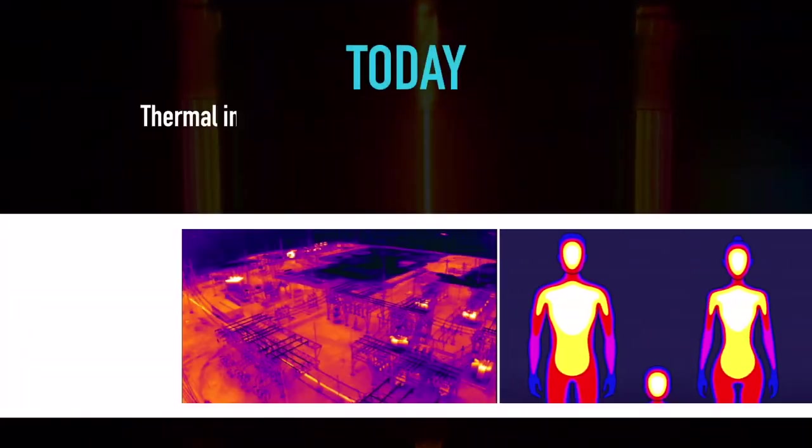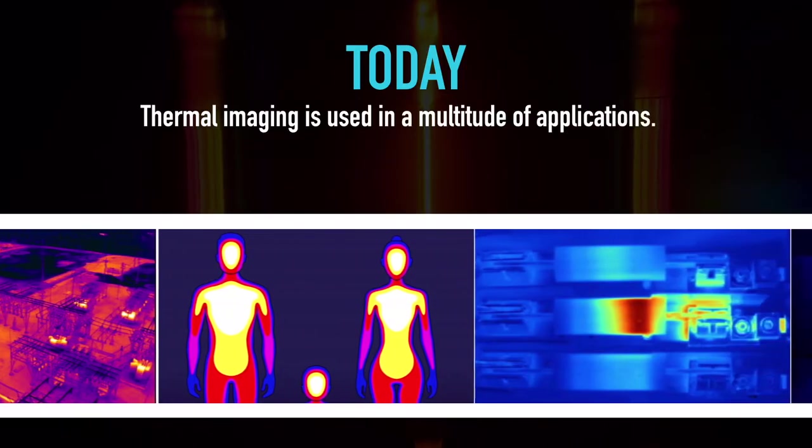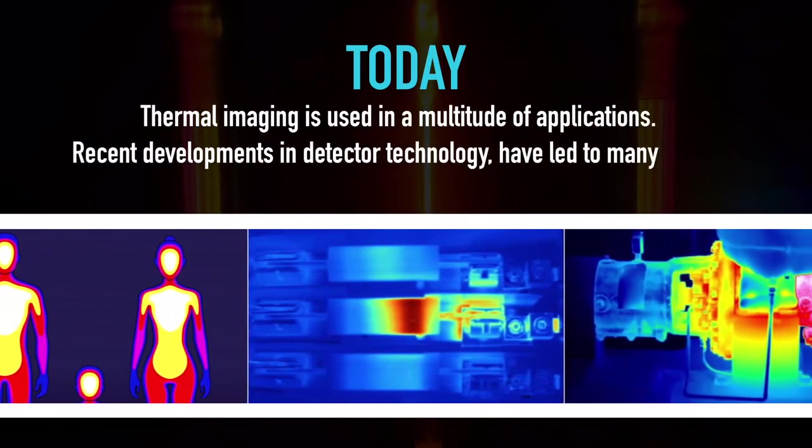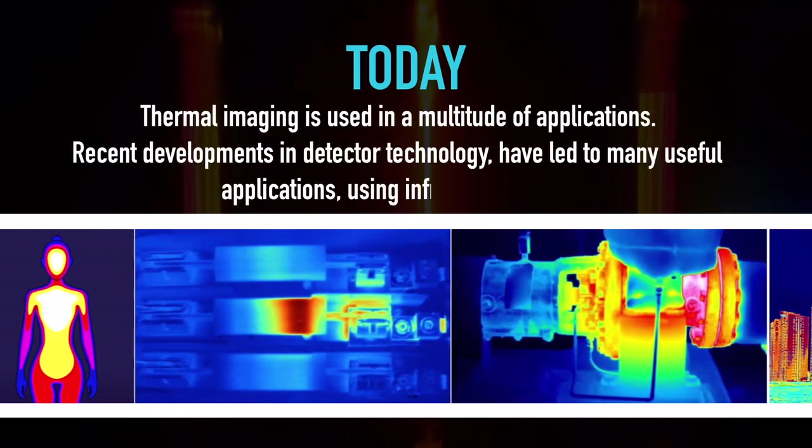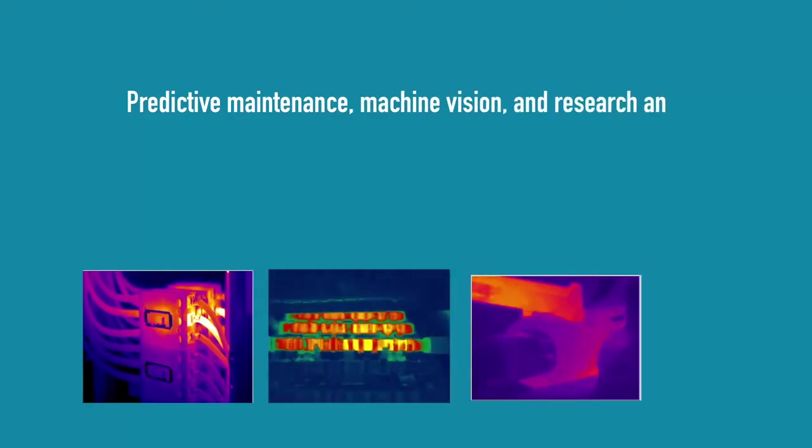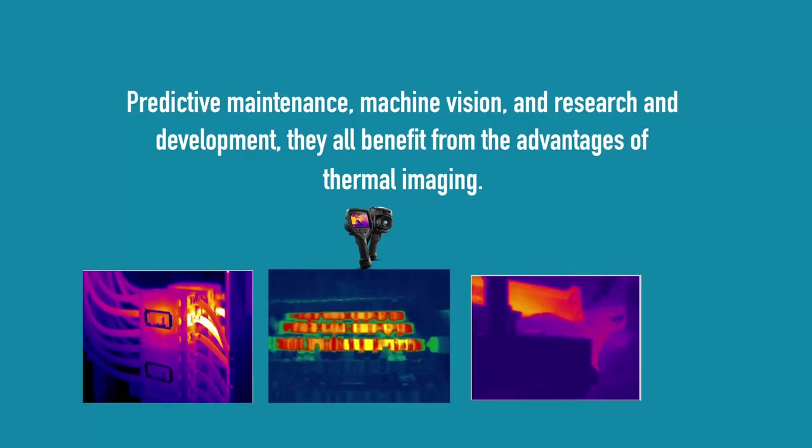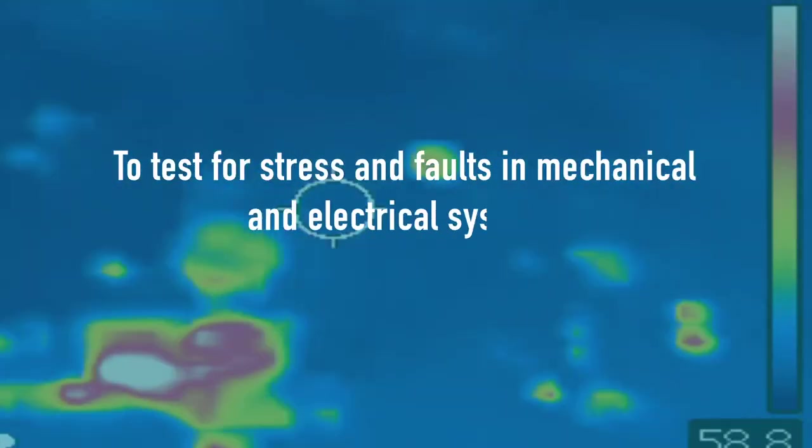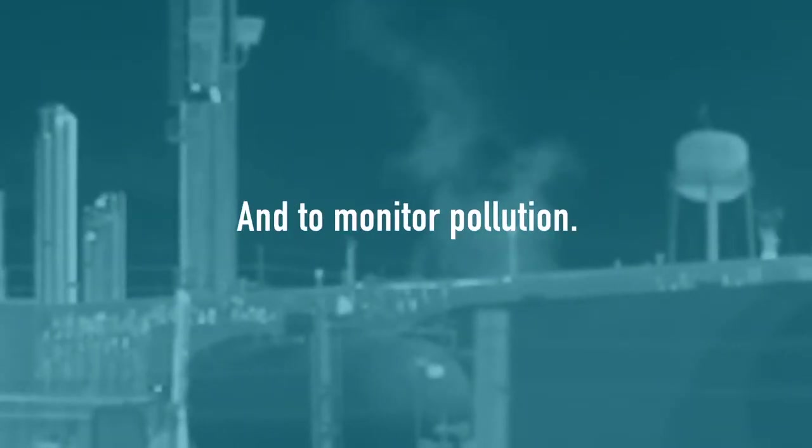More than 200 years after William Herschel's discovery of thermal imaging, today thermal imaging is used in a multitude of applications. Recent developments in detector technology have led to many useful applications using infrared radiation. Predictive maintenance, machine vision, and research and development, they all benefit from the advantages of thermal imaging. Thermal imaging is used to detect heat loss in buildings, to test for stress and faults in mechanical and electrical systems, and to monitor pollution.